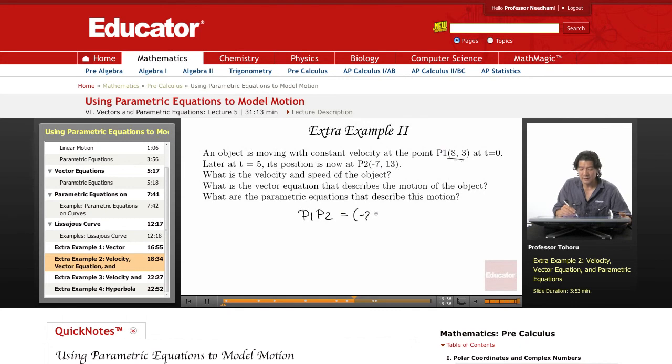I'll say negative 7 minus 8 is its x position. 13 minus 3 is its y position. So that simply gives us negative 15 and 10.